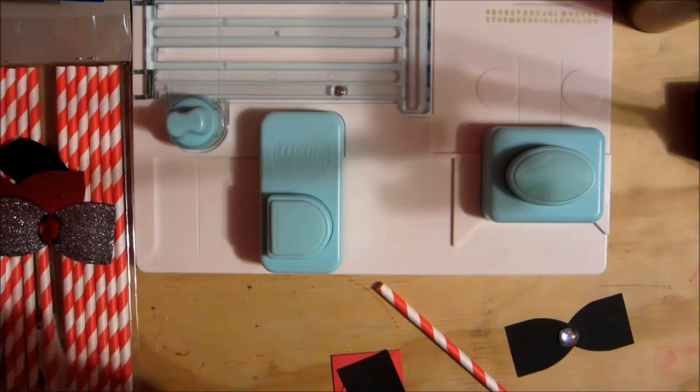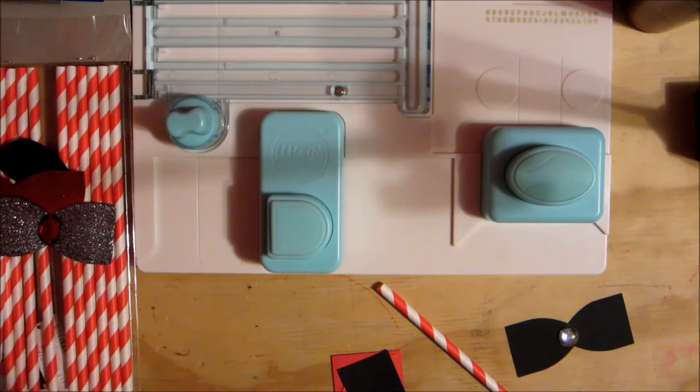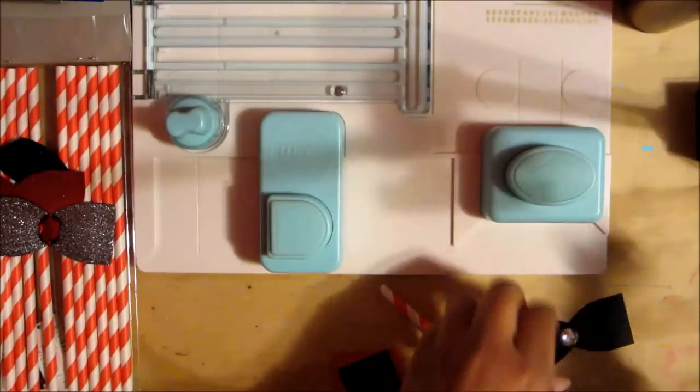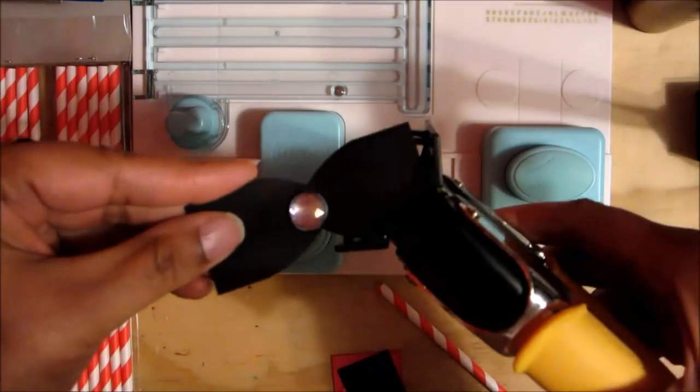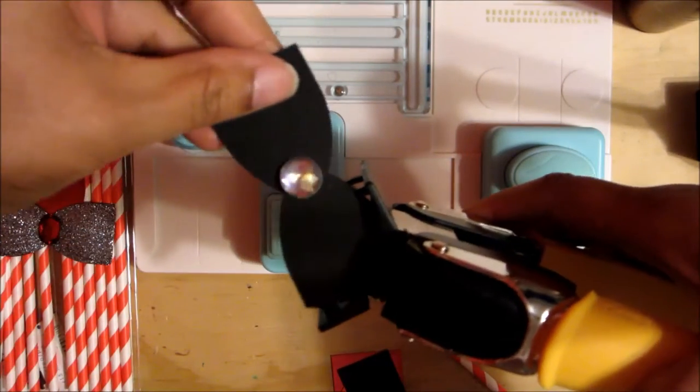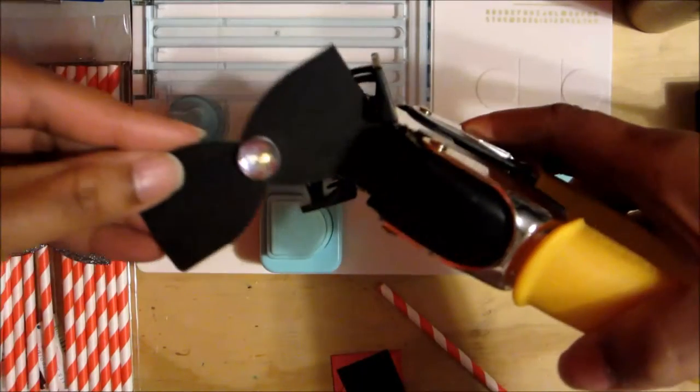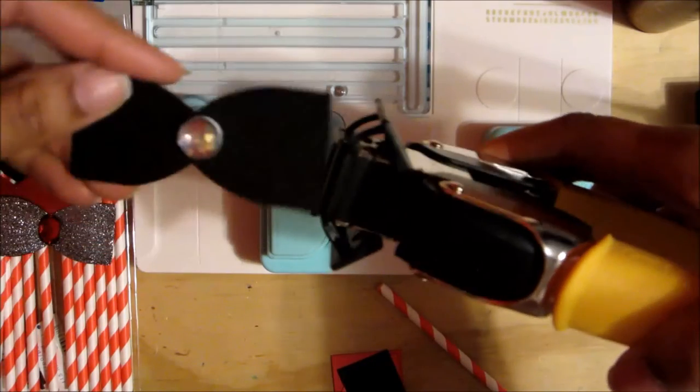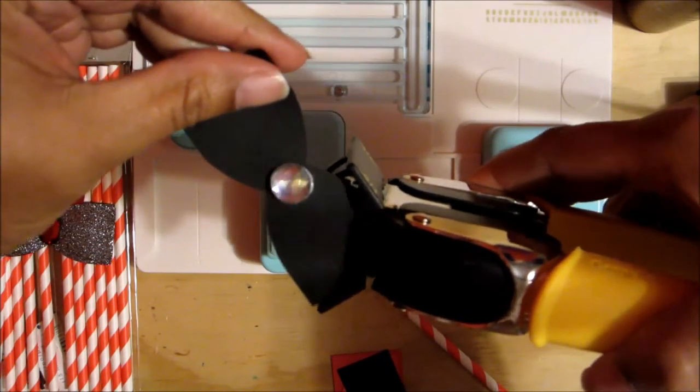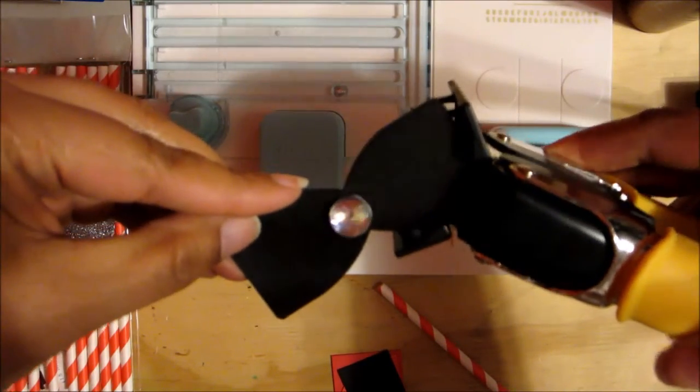That'll be your first prop. I do have a corner rounder, also by We R Memory Keepers, but use whatever corner rounder you have. Mine is the 1/8 inch corner rounder. I just take my paper and corner round all the sides to get that round effect.